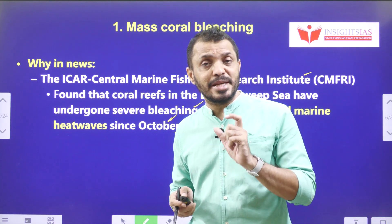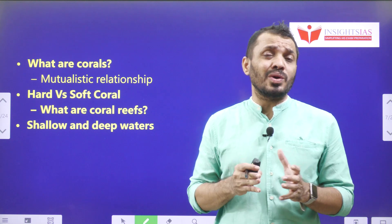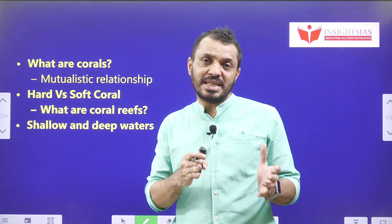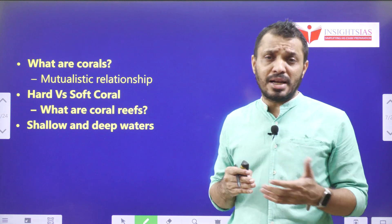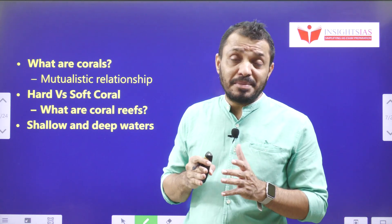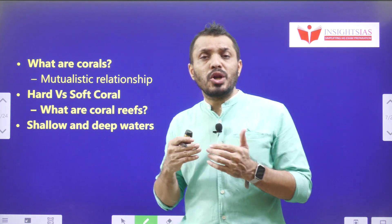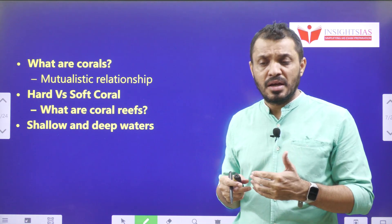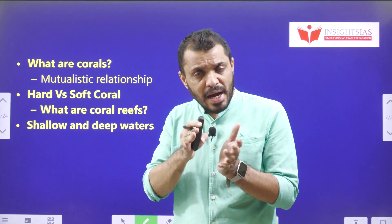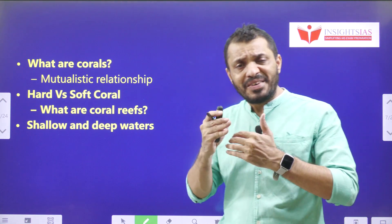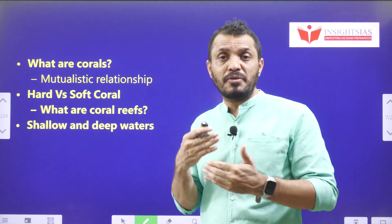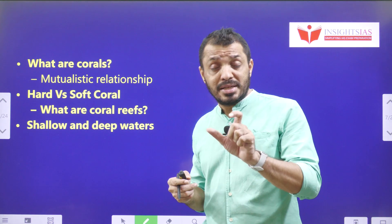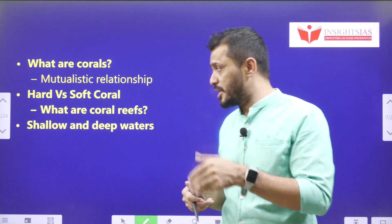First, we need to understand what coral is. Coral is actually a combination of organisms — it consists of both an animal and a photosynthetic algae. Two things are present: the polyp and the algae. The polyp gives protection, whereas the algae synthesizes food through photosynthesis. The algae gives food to the polyp, and the polyp gives protection to the algae. When one organism depends on another like this, that relationship is known as a symbiotic relationship or mutualism.